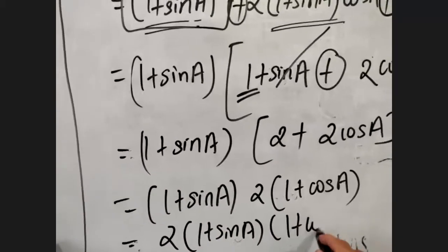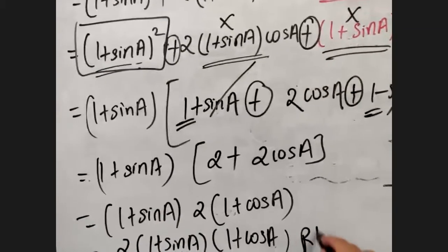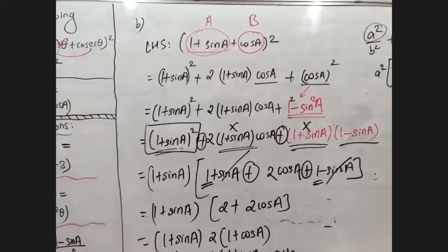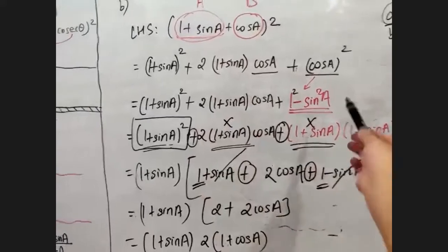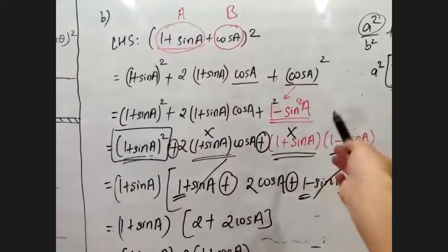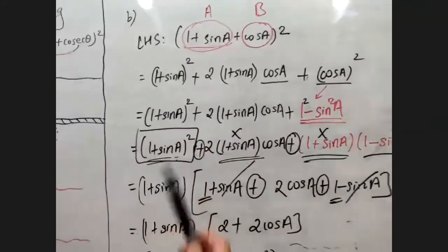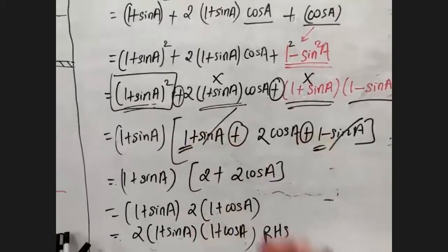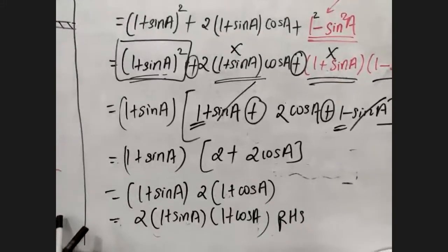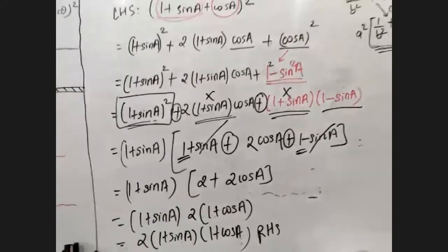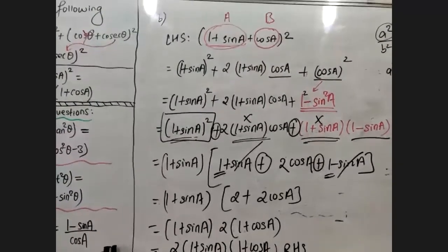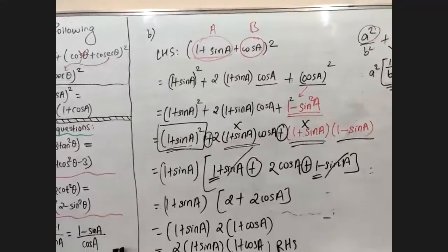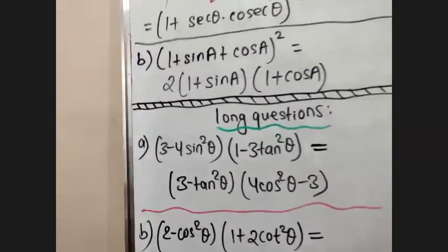So in summary: we decided a and b, opened the whole square, converted the last part using the sine identity, used the a² minus b² format, took common from all three parts, cancelled the two sine terms, added the two ones, and took 2 as common, then shifted it to the front. This completes the proof. Raise your hand if you are clear.